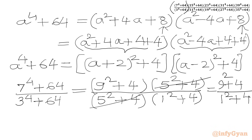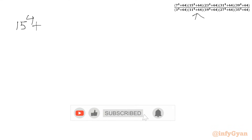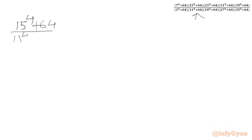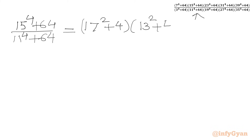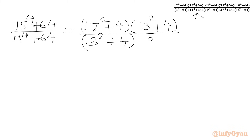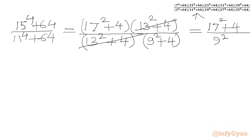Now the second ratio: 15⁴ + 64 over 11⁴ + 64. With a = 15: (15 + 2) = 17, so 17² + 4; (15 − 2) = 13, so 13² + 4 in the numerator. In the denominator with a = 11: (11 + 2) = 13, so 13² + 4; (11 − 2) = 9, so 9² + 4. We cancel (13² + 4), giving (17² + 4) over (9² + 4).